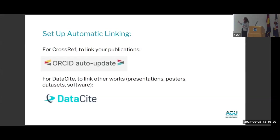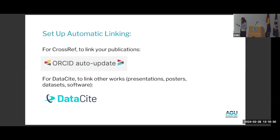To set up automatic linking, there's a great tutorial on ORCID's website. You'll primarily want to link to Crossref for your publications, and to Datasite, which will draw in your presentations, posters, datasets, and software.